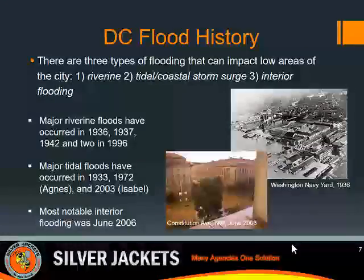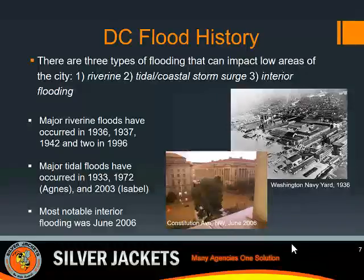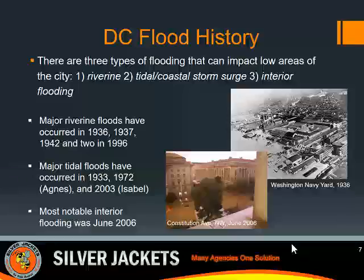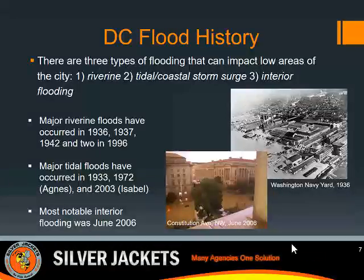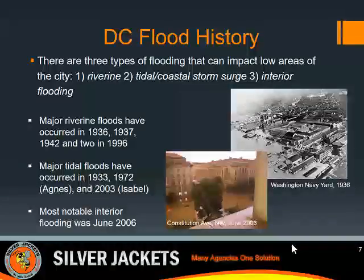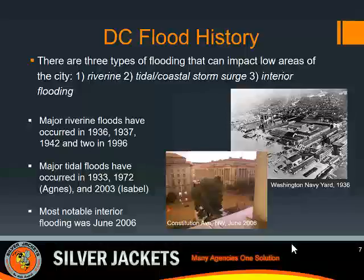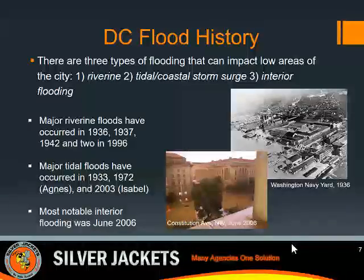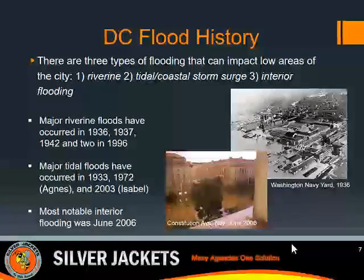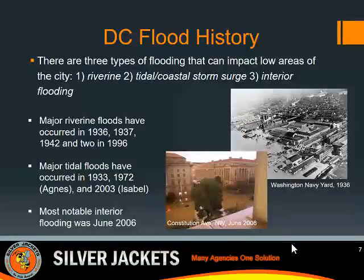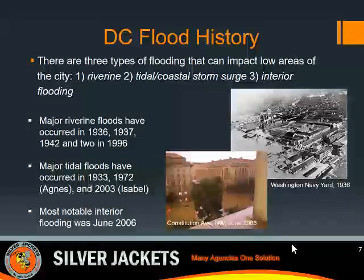DC is susceptible to three types of flooding. There's riverine flooding — flood waters coming downstream along the Potomac and Anacostia Rivers, such as the flood of record in 1942. It's also susceptible to tidal flooding, where water is pushed up from the Chesapeake Bay into the Potomac and Anacostia Rivers during tropical storms and hurricanes, such as Tropical Storm Agnes and Isabel. The third type is interior flooding, where heavy localized rainfall overwhelms the storm drain system, such as what happened in June 2006 in the Federal Triangle area.